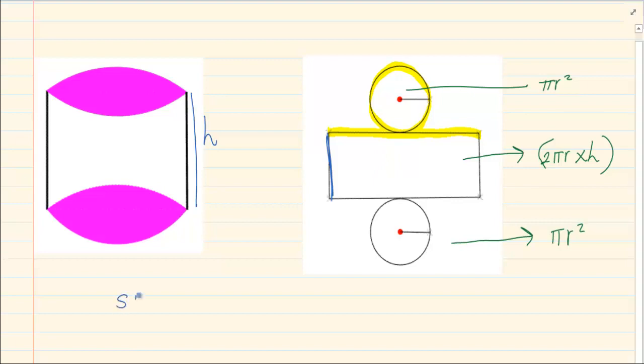Standardly we would say the surface area of a cylinder is equal to 2 pi r squared. Why? Because I have 1 circle, 2 circles and I would say plus 2 pi r h. Why? Because of the center portion. But when you are doing a question, you must be careful if there is 2 circles or if there is only 1.